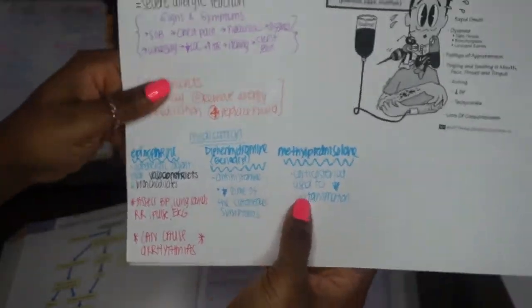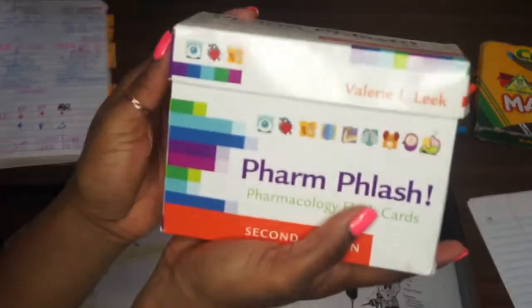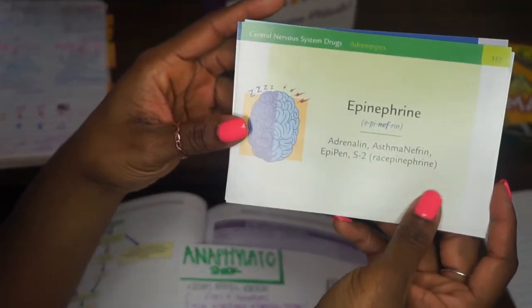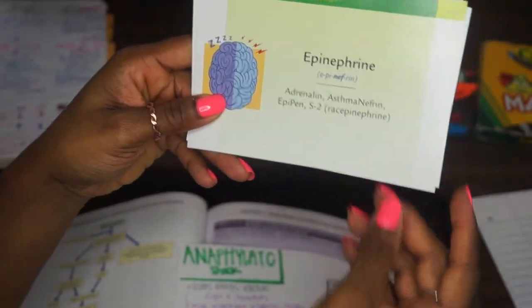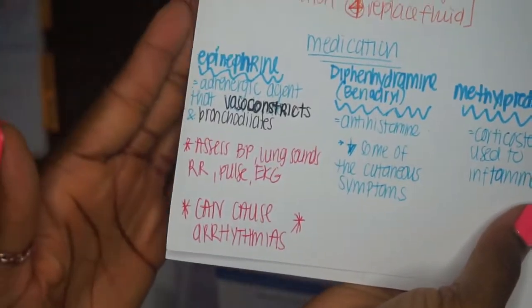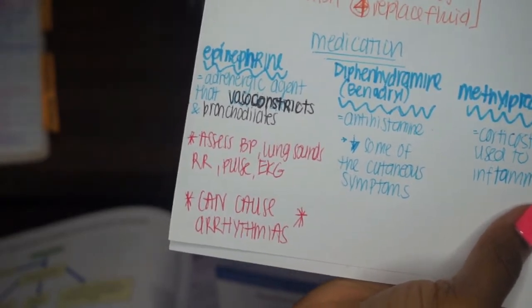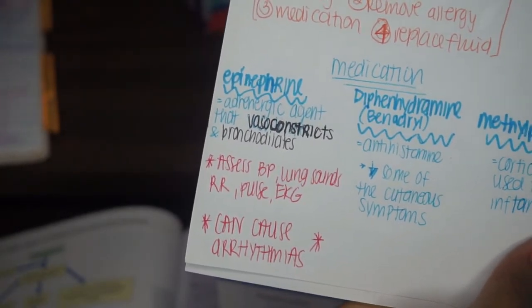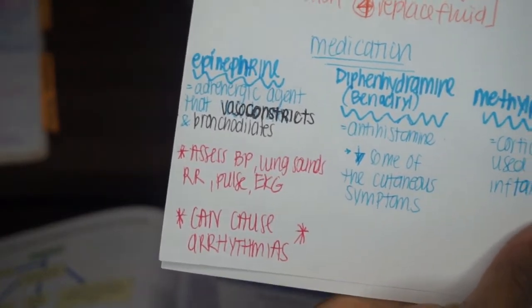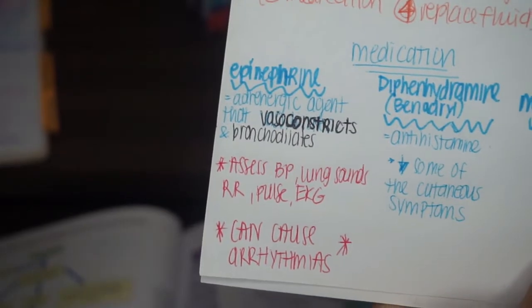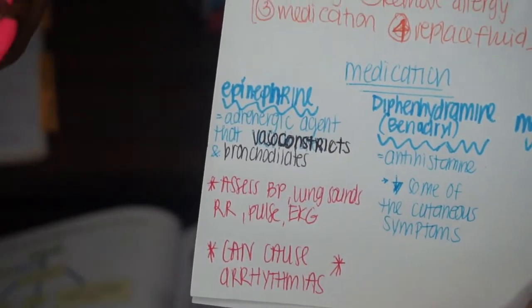With the medications, I refer back to my Farm Flash cards — I'm not sponsored by them, but I highly recommend getting these; they will make your life a whole lot easier. The first card pulled up is epinephrine. It's an adrenergic agent that helps to vasoconstrict as well as bronchodilate. It helps your lungs expand so you can get more oxygen, and it vasoconstricts so that blood goes to more pertinent and crucial areas like your brain, lungs, and kidneys. Perfusion is very crucial. Based on the Farm Flash, I take little snippets that are important.